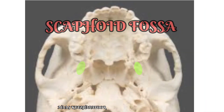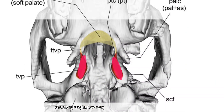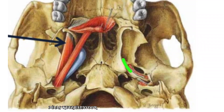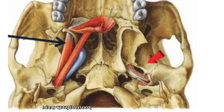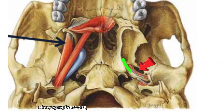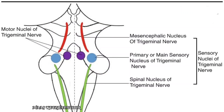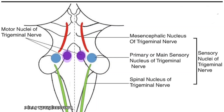The upper end of the posterior border of the medial pterygoid plate bifurcates and forms the boundaries of the scaphoid fossa. Tensor veli palatini muscle takes origin from this fossa. Remember, this fossa is medial to the foramen ovale, so tensor veli palatini is medial to the trunk of the mandibular nerve. Now let us see the cranial nerve nuclei for the trigeminal nerve. The motor nucleus of the trigeminal nerve is present in the upper part of the pons.